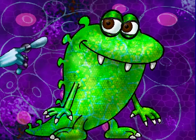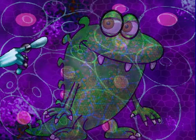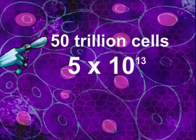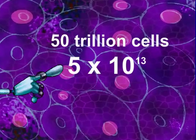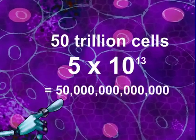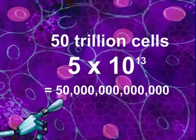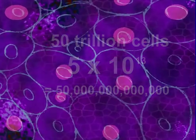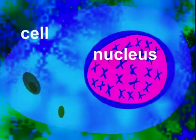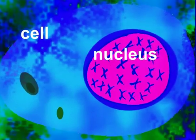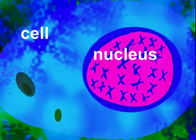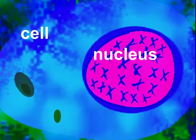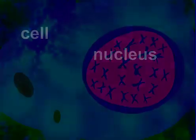Your body is made up of cells, on the order of perhaps 50 trillion — that is 5 times 10 to the 13th power, which is the same as 5 with 13 zeros. Within each of our cells is a nucleus, and within this nucleus is a molecule that is the key to life on our planet.